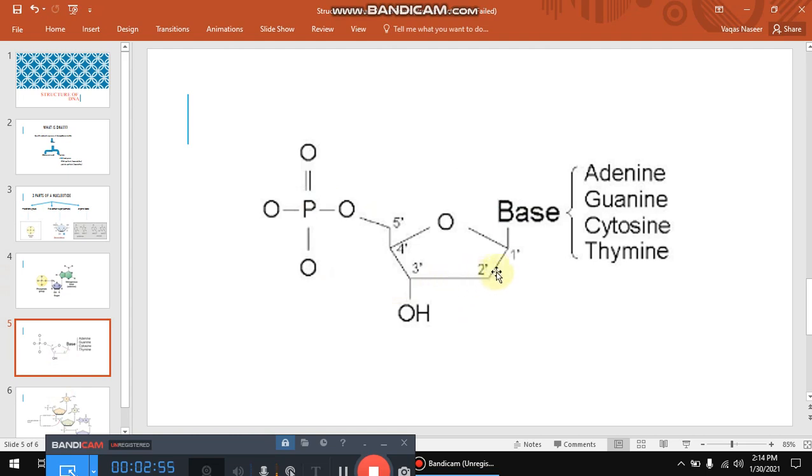You can see over here that at the one prime carbon of the pentose sugar, the base is attached, while at five prime carbon, phosphate group is attached.